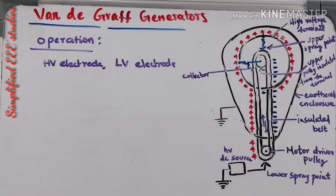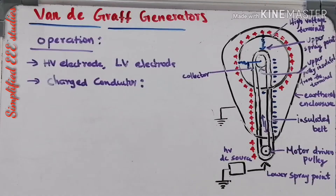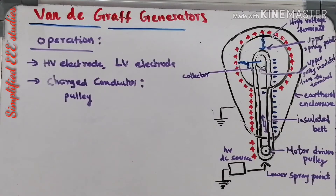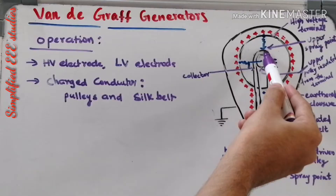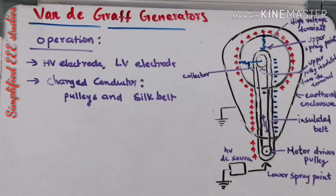The high voltage electrode will act as a hollow conductor. The LV electrode will act as a charged conductor. The structure of the charged conductor consists of two segments: metal pulleys P1 and P2, and a silk belt. The pulleys P1 and P2 have been connected with the help of a silk belt.